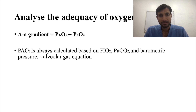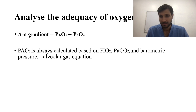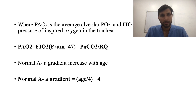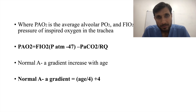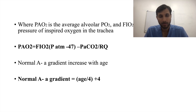We analyze the adequacy of oxygenation using the A-a gradient — alveolar oxygen minus partial pressure of oxygen in blood. PaO2 is calculated based on FiO2, PaCO2, and barometric pressure using the alveolar gas equation: PaO2 = FiO2 × (atmospheric pressure − 47) − PaCO2/respiratory quotient, which simplifies to approximately 150 − PaCO2/0.8. The normal A-a gradient increases with age and is calculated as: age/4 + 4.